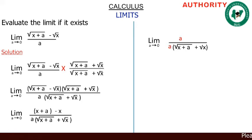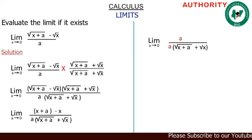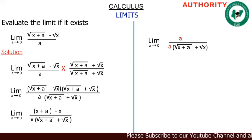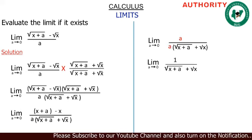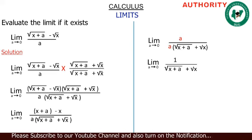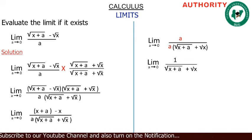Now a divided by a gives you one in the numerator, and a divided by a in the denominator also gives one. So we are left with the limit as a approaches zero of one over the square root of (x plus a) plus the square root of x.